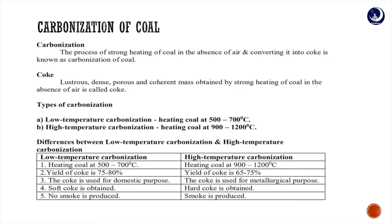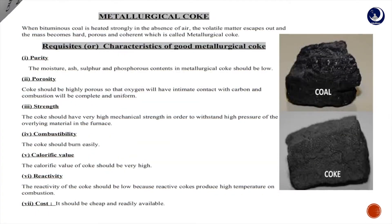The main thing about carbonization of coal is that it is nothing but heating coal in the absence of air to get coke. When coal is heated strongly in the absence of air, it is converted into a lustrous, dense, porous, and coherent mass known as coke. This process of converting coal into coke is known as carbonization.